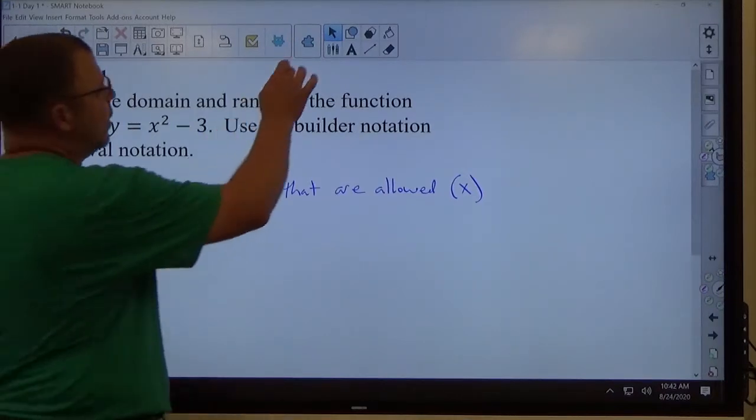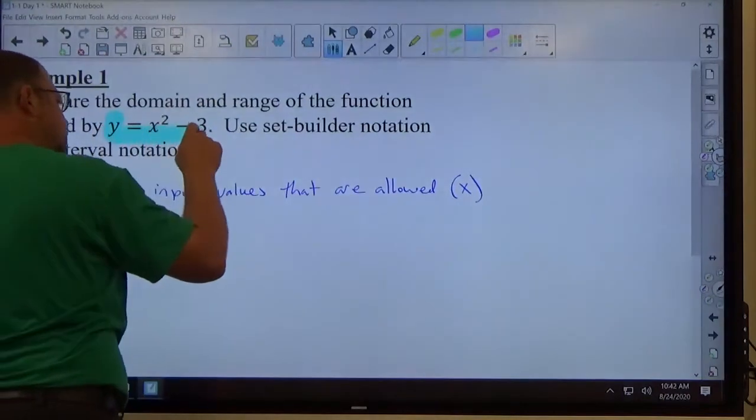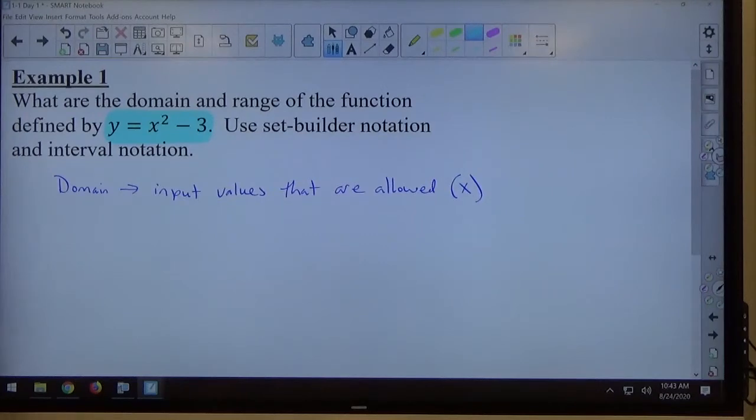When we have an equation like this, y equals x squared minus three, I'm looking at the x and asking myself what's happening to x. x is being squared. Right now, I'm going through my head. What numbers are allowed to be squared? Can I square positive numbers? Sure. Five times five is 25. Four times four is 16. Can I square zero? We can square zero. Can we square negative numbers? Negative two times negative two is positive four. Sure, we can do that too.